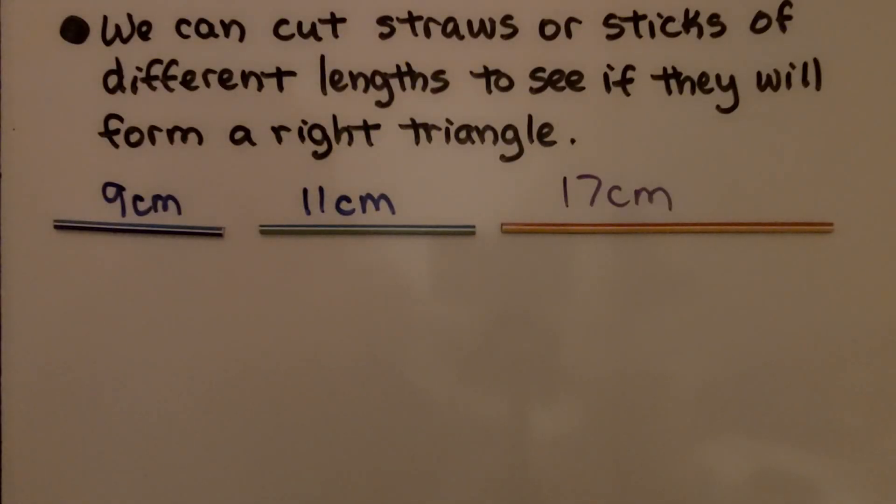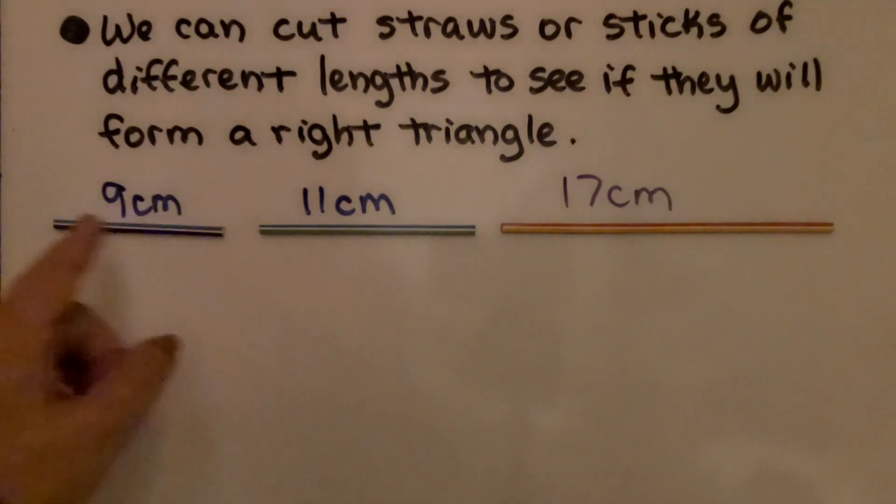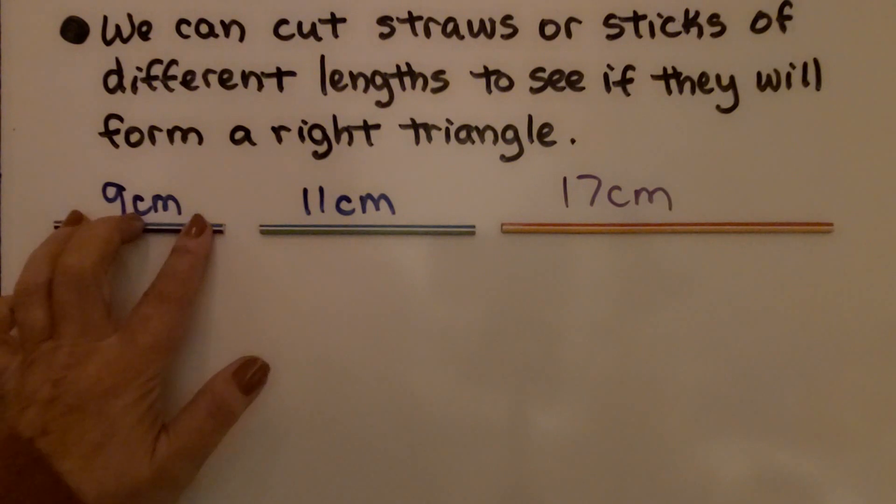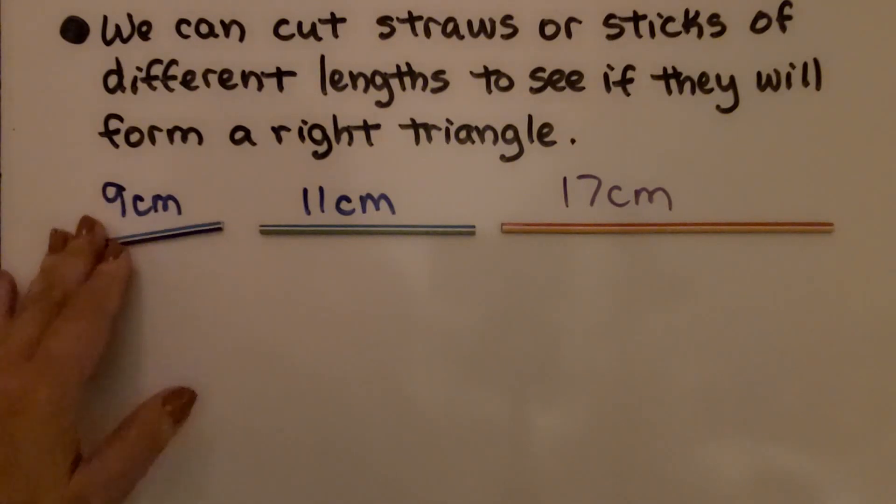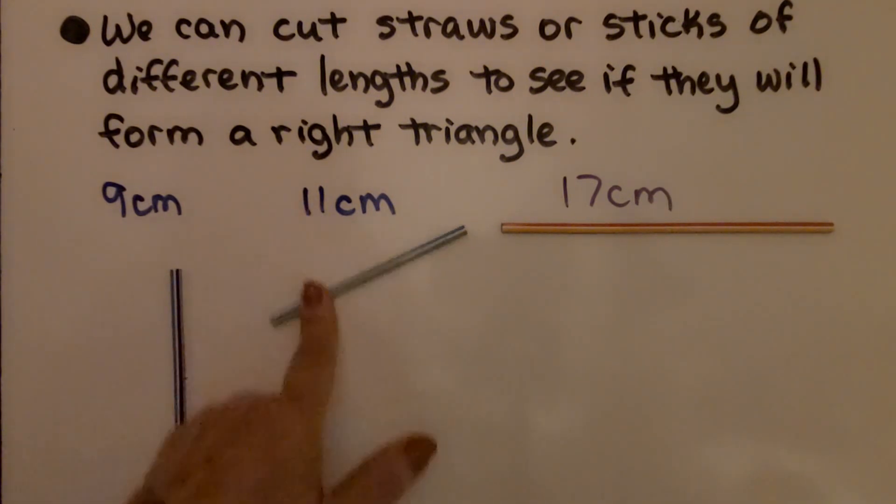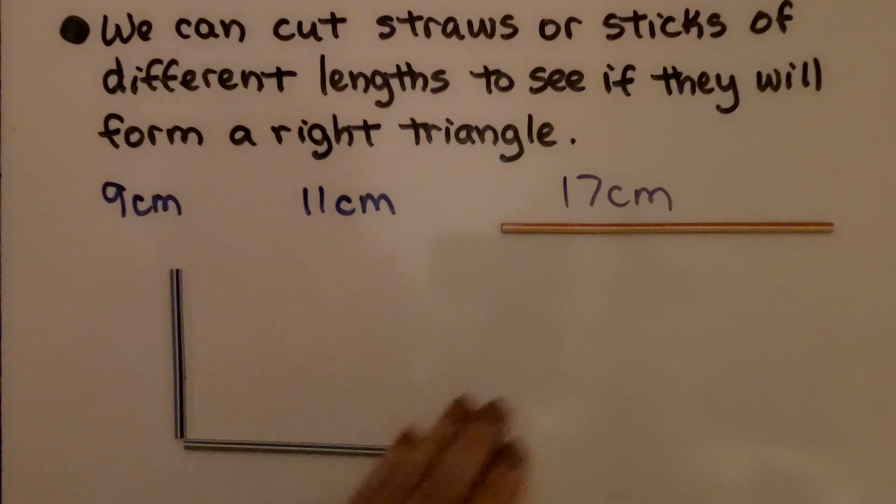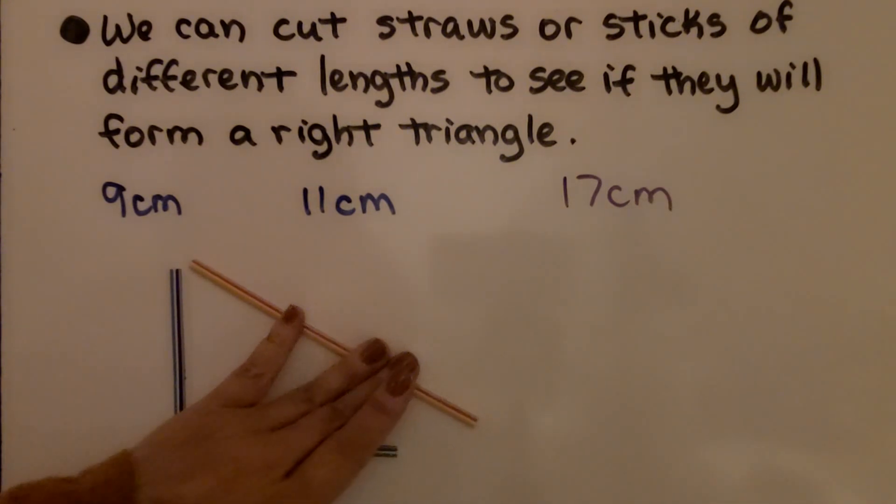We can cut straws or sticks of different lengths to see if they will form a right triangle. Cut the stick to a certain measure like a whole number and we can try to see if we can form a right triangle. We can put this one like this to make our right angle and then we can take this one to see if it fits.